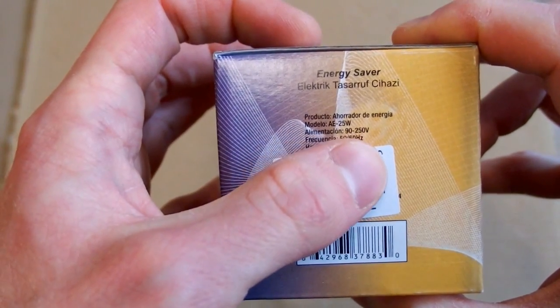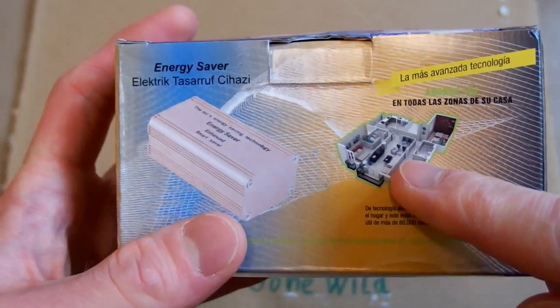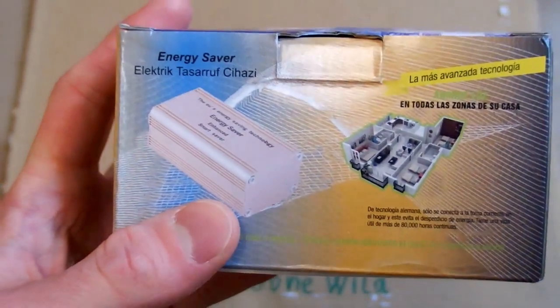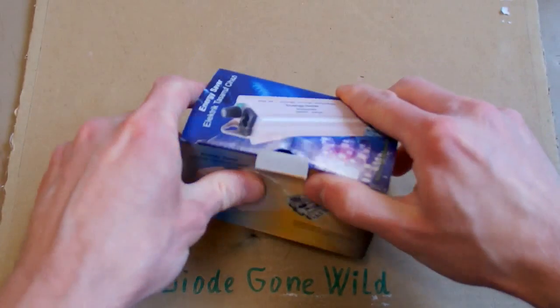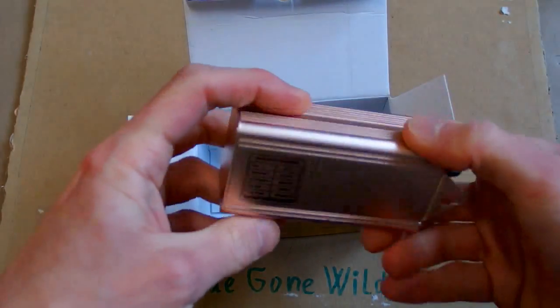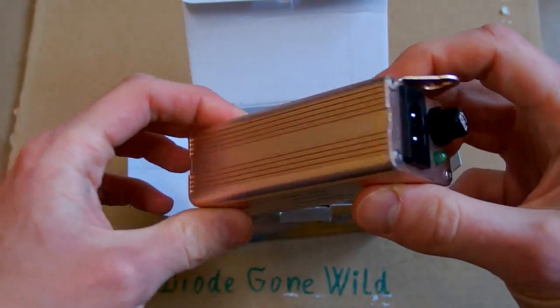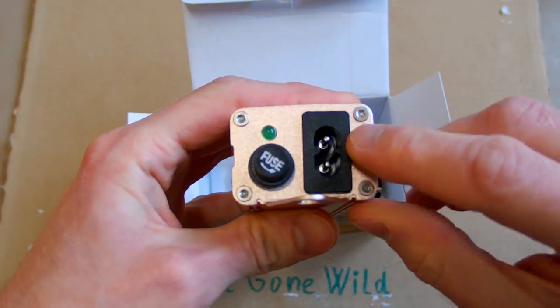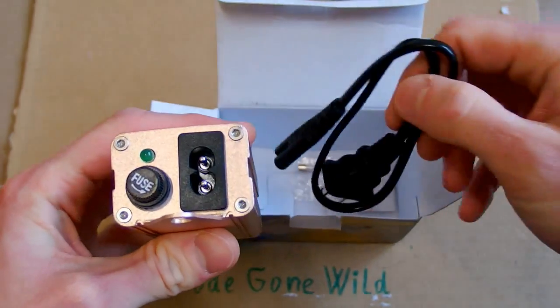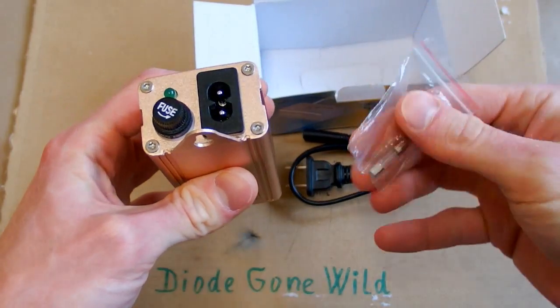There's the voltage and frequency and this one shows some picture of a household or so. So let's open it up. Here's the device in a metal housing with a connector, a fuse and an LED for indication, a cable and a spare fuse.